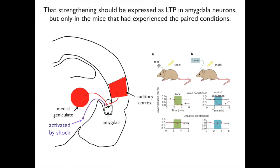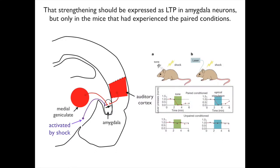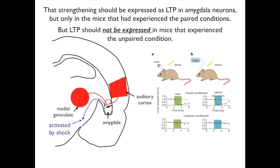The strengthening should be expressed as long-term potentiation in amygdala neurons, but only in the mice that experienced the paired conditions. Long-term potentiation should not be expressed in mice that experienced the unpaired condition. To evaluate long-term potentiation, they anesthetized a mouse, removed its brain, sliced the brain into thin sections, and put the sections in a dish.